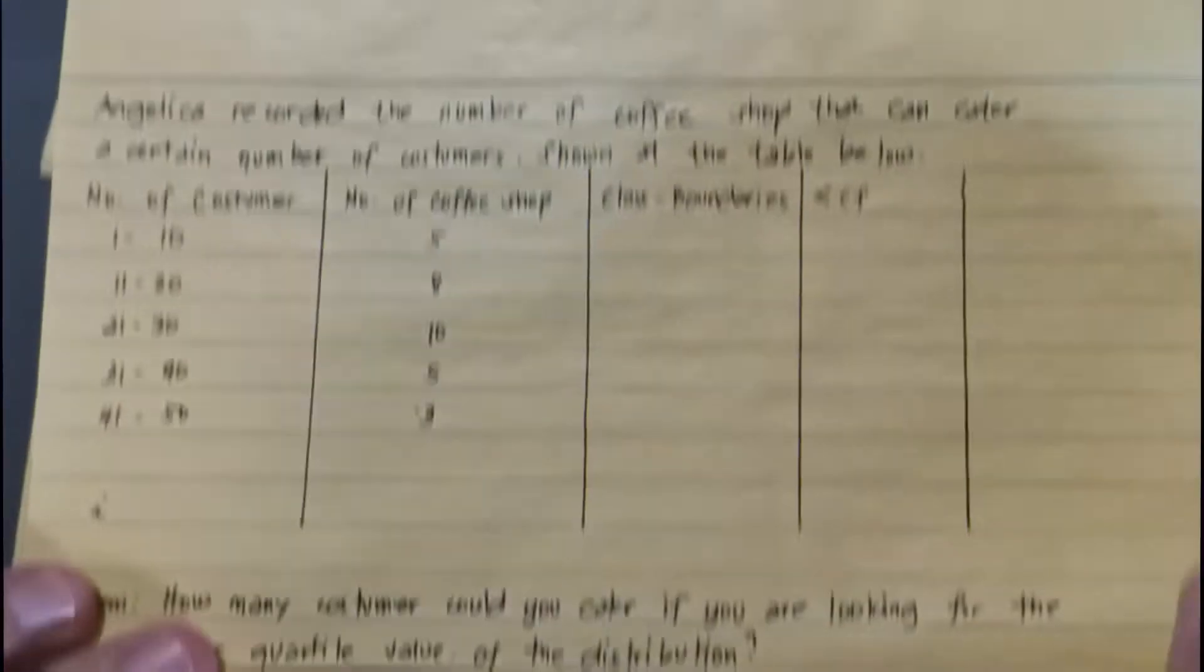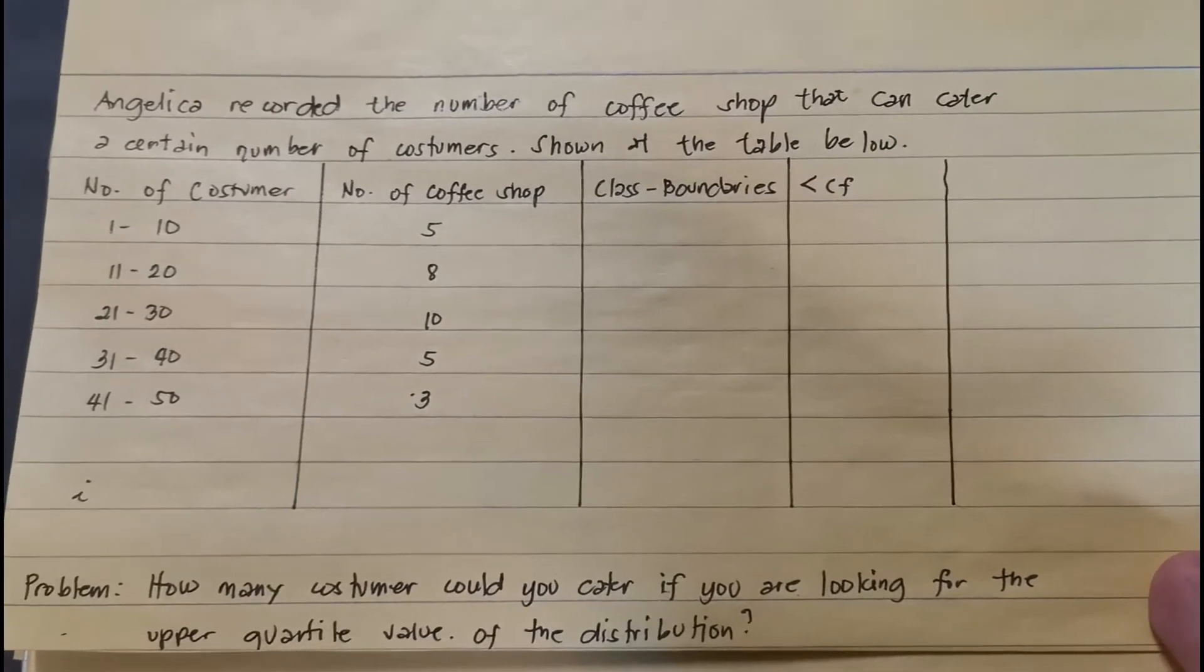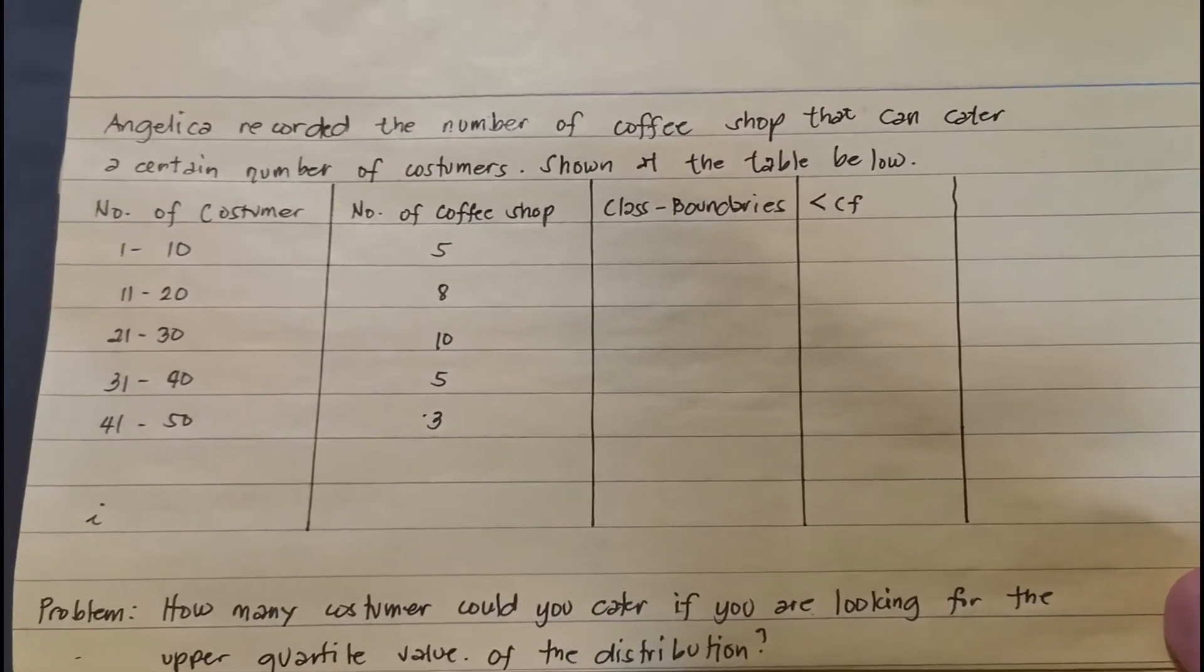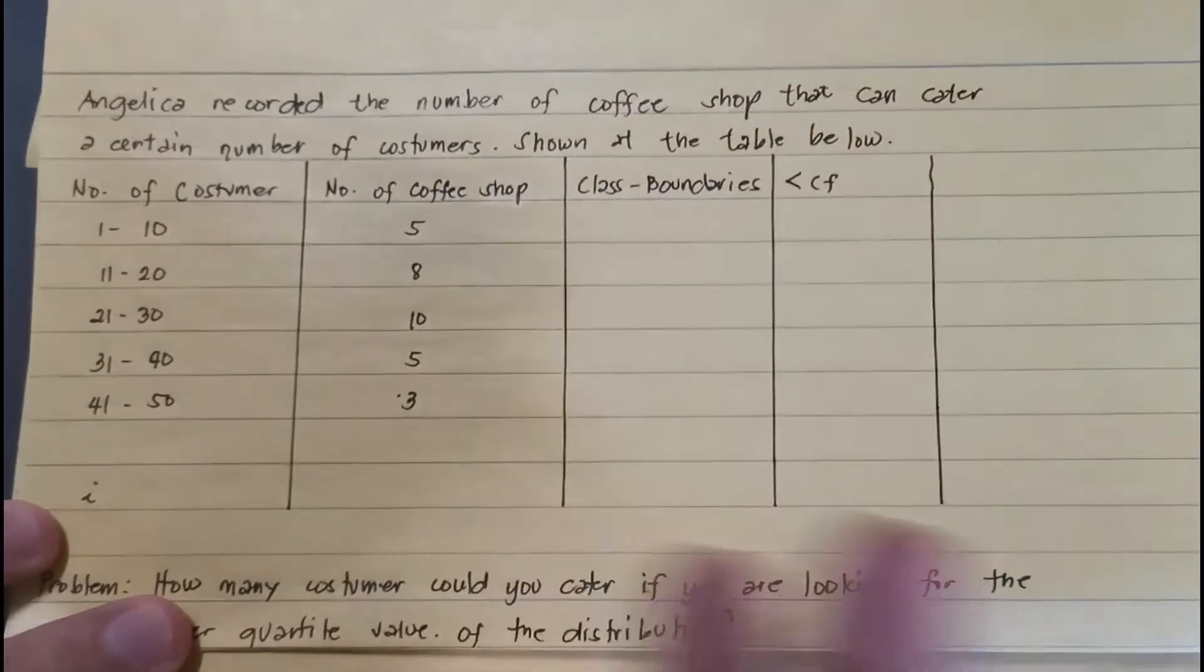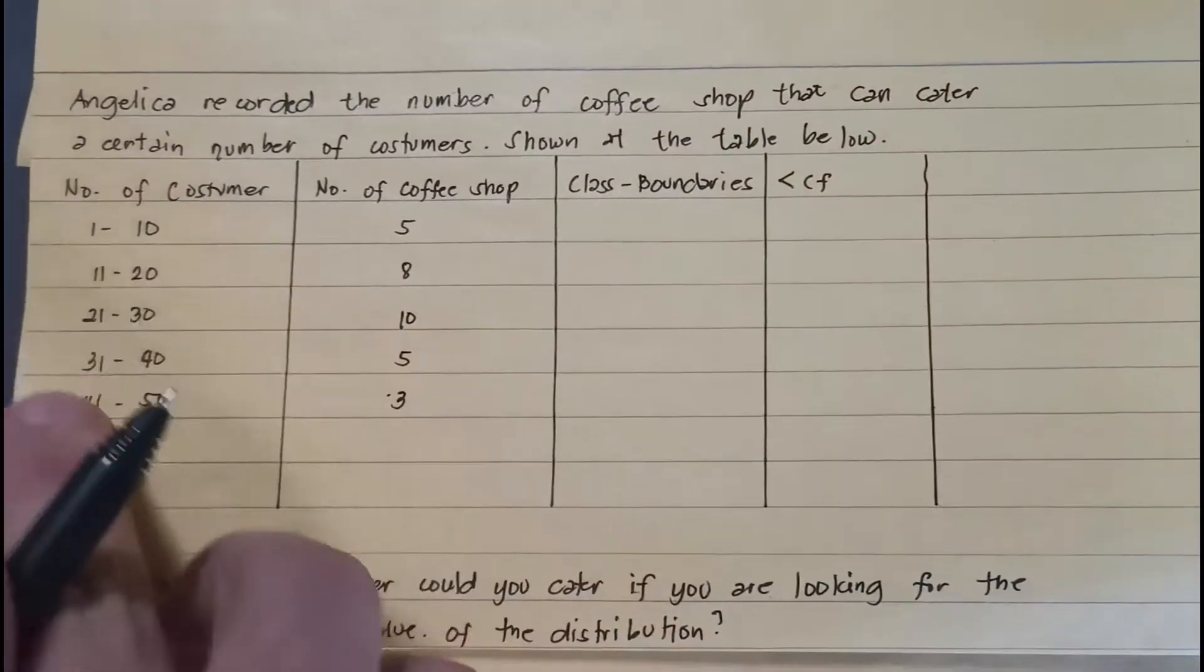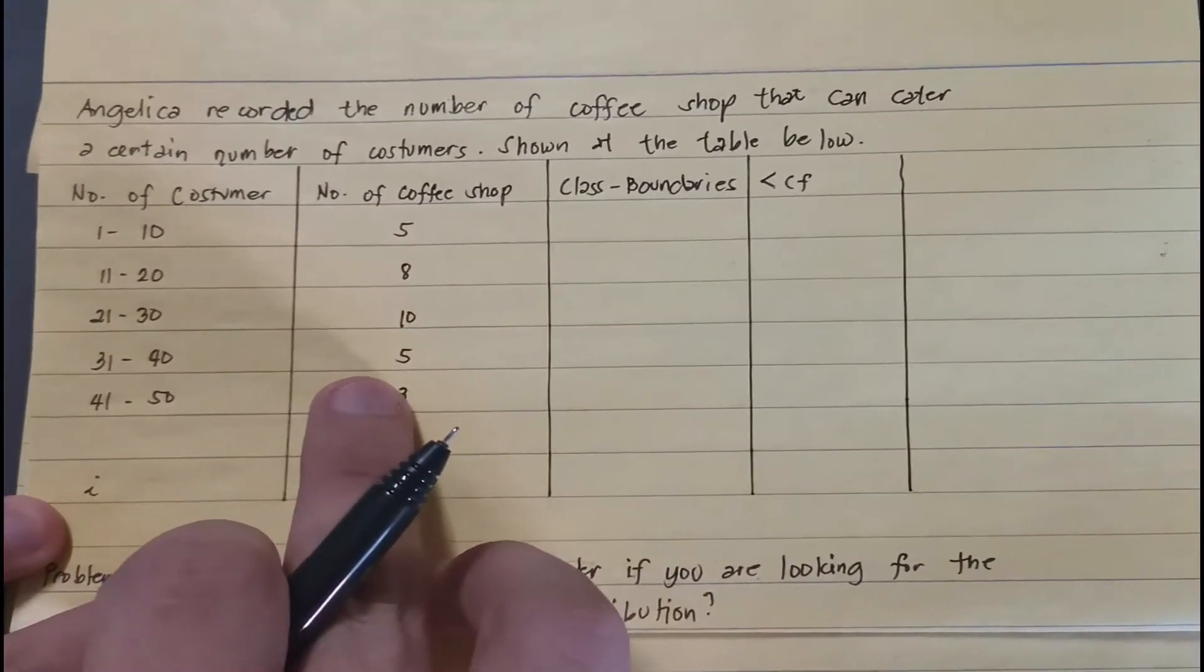What are you waiting for? Mga ka TV, let's go. Let's have an example. For our example, here is our problem. Angelica recorded the numbers of coffee shops that can cater a certain number of customers, as it is shown on the table. So we have here the number of customers, and then we have here the number of coffee shops.